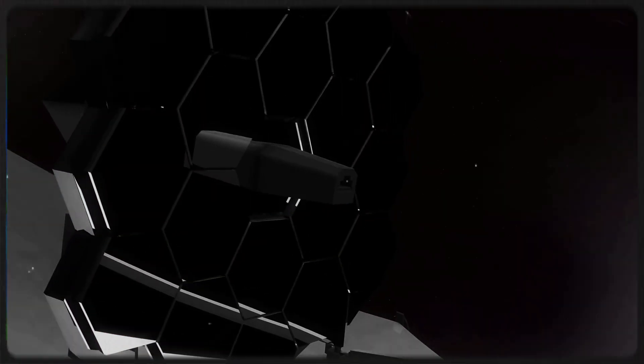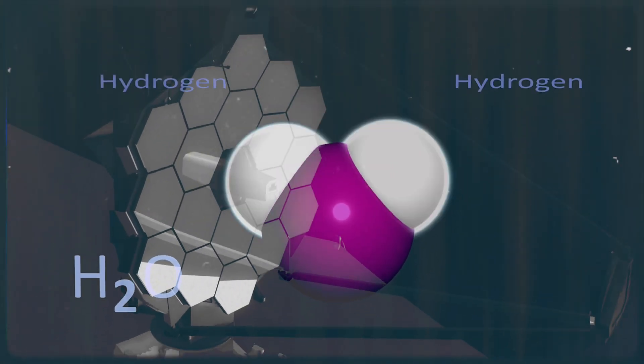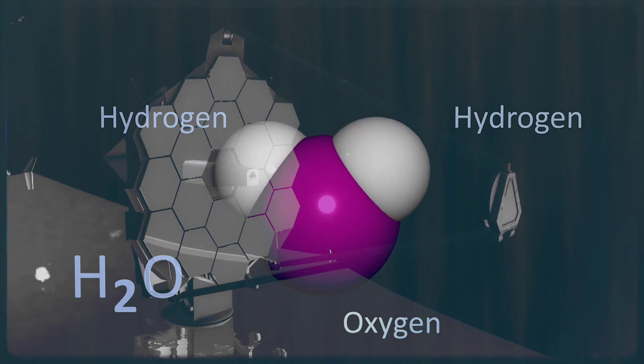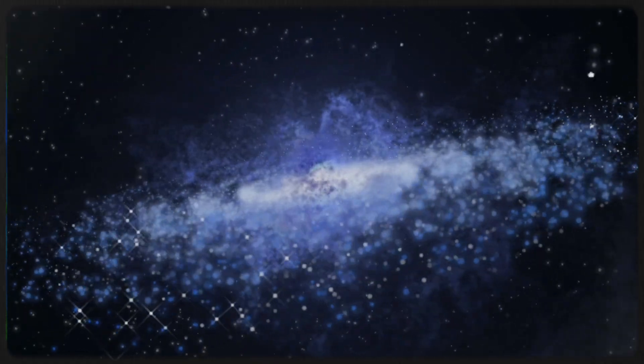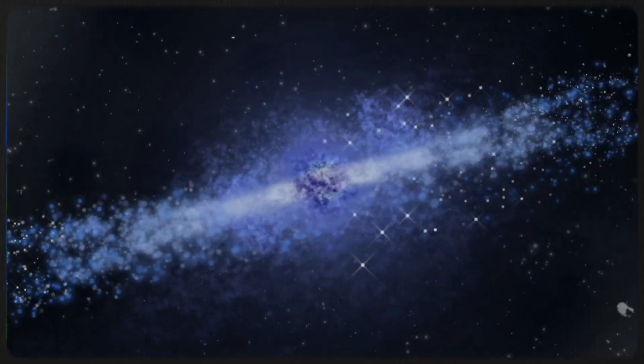Thanks to the James Webb Space Telescope's mid-infrared instrument, researchers also picked up light from elements like hydrogen and oxygen, a sign that this galaxy was already mixing things up chemically. That means star formation, and maybe even the building blocks of life, could have started way earlier than we thought.